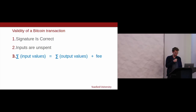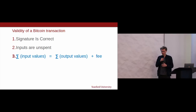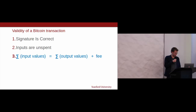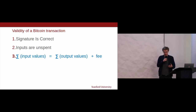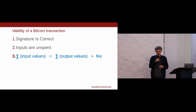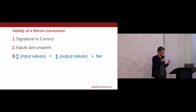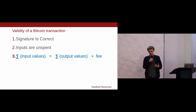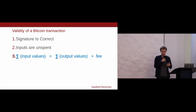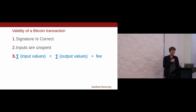We also have the fee, which turns out to be the exact difference between the inputs and outputs. So what makes a Bitcoin transaction valid? First, there need to be signatures on the inputs — you need to be authorized to spend them. Second, the inputs must be unspent — there are unspent transaction outputs, UTXOs; you can't double spend. And third, the sum of the inputs must equal the sum of the outputs plus the fee.